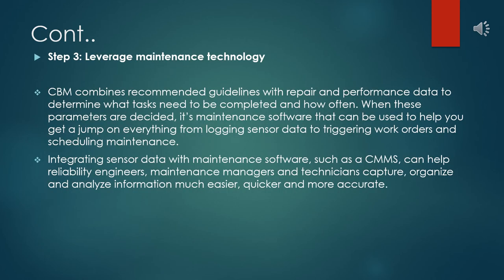Step 3 is to leverage maintenance technology. Condition-based maintenance combines recommended guidelines with repair and performance data to determine what tasks need to be completed and how often. When these parameters are designed into maintenance software, it can help with everything from logging sensor data to triggering work orders and scheduling maintenance. Integrating sensor data with maintenance software such as a CMMS can help reliability engineers, maintenance managers, and technicians capture organized analysis information much easier, quicker, and more accurately.